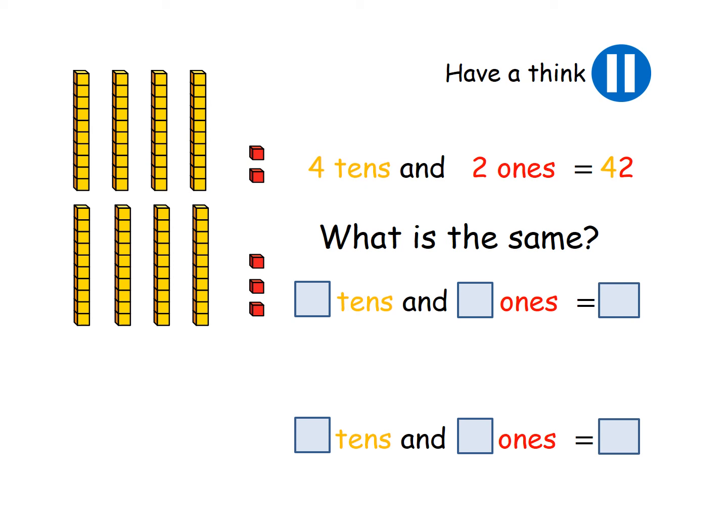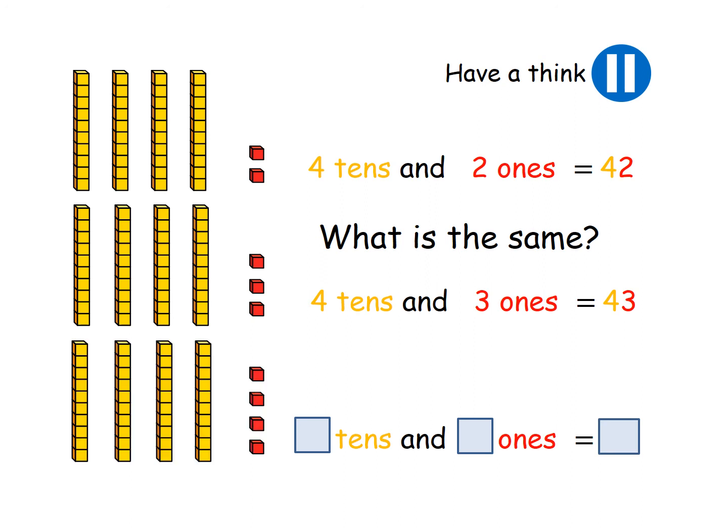This time, how many tens are in this number? How many ones are in this number? There are four tens and three ones. So the answer is 43. What's stayed the same this time? Well done. The tens have stayed the same, haven't they? And what's changed? The ones have changed, haven't they? And then the last one, fill in the gaps for me. You can pause the video for extra time. Four tens and four ones is 44.